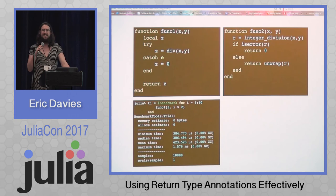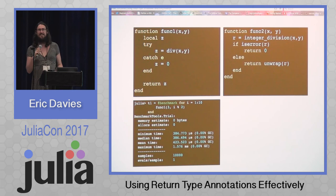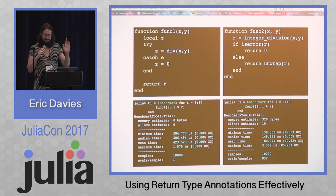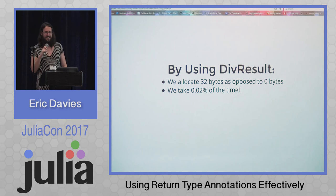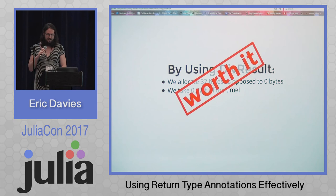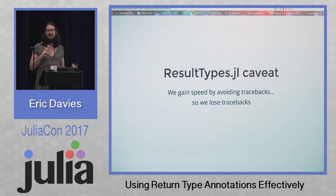Exception handling is expensive — when you hit an error condition it performs stack unwinding, which is an expensive operation you can't really compile out to a single instruction. But ResultTypes is very fast — much faster. It ends up being 0.02% of the time with only 32 bytes allocated, as opposed to using exceptions. That's probably totally worth it, depending on your use case. The big caveat when using ResultTypes is that we gain speed by avoiding tracebacks, so you don't get tracebacks with the errors contained in ResultTypes. That can sometimes be okay, or maybe you don't want that.